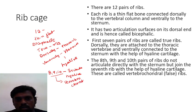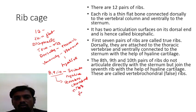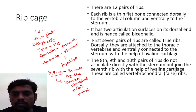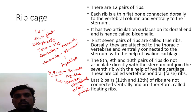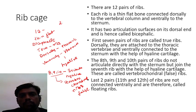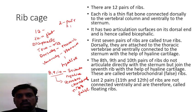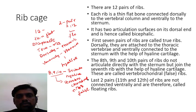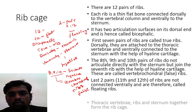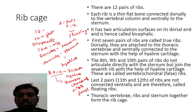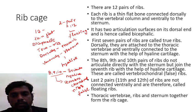The vertebrochondral rib bones are false rib bones. The last two pairs of rib bones — the eleventh and twelfth — do not connect ventrally and are therefore called floating ribs. Together, the thoracic vertebrae, ribs, and sternum form the rib cage.